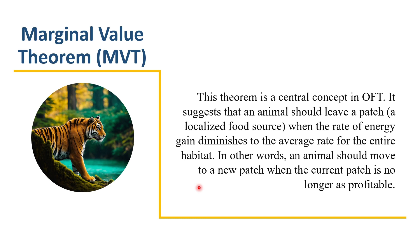The animal has to move to a new patch when the current patch is no longer as profitable. There may still be some food, but it will not be profitable enough to satisfy the most economic and efficient strategy — balancing energy gain and consumption. So for profit, it must give up the previous patch and move to a new one. That is the marginal value theorem.